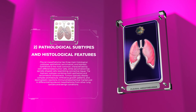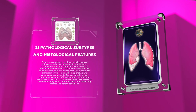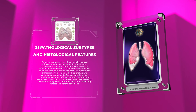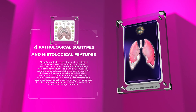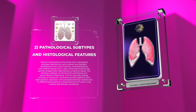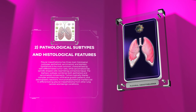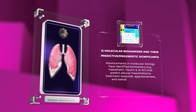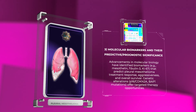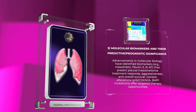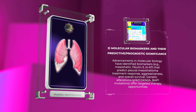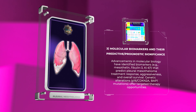Epithelioid is the most common, characterized by well-differentiated tumor cells, while sarcomatoid consists of spindle-shaped cells resembling connective tissue. The biphasic subtype combines both epithelioid and sarcomatoid components. Tumors typically display complex architecture, infiltrative growth patterns, and desmoplastic reactions. Immunohistochemical markers aid in differentiating pleural mesothelioma from other lung cancers. Advancements in molecular biology have identified biomarkers — such as mesothelin, fibulin-3, and Ki-67 — that predict treatment response, aggressiveness, and overall survival.